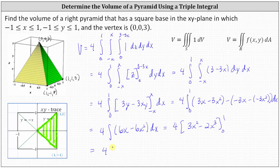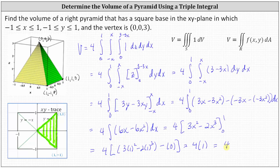Evaluating from x = 0 to x = 1: F(1) equals 3 times 1 squared minus 2 times 1 cubed, and F(0) is zero. Simplifying, we have 3 minus 2, which equals 1. Multiplying by the factor of four, we get 4 times 1, which equals four. This indicates the volume of the pyramid is four cubic units.